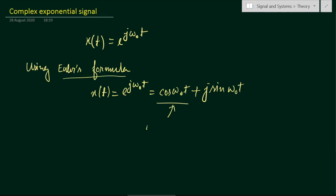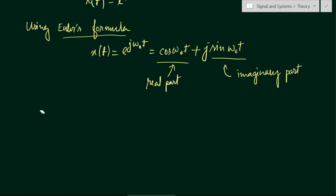Here, cos(ω₀t) is the real part and sin(ω₀t) is the imaginary part of the complex exponential signal.